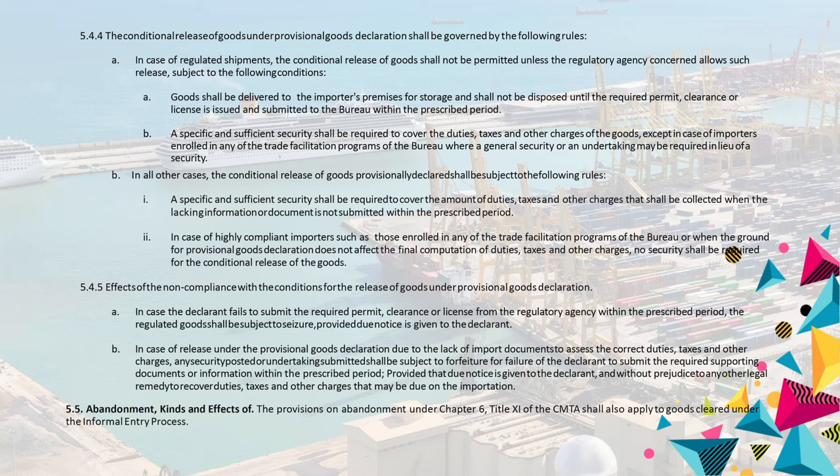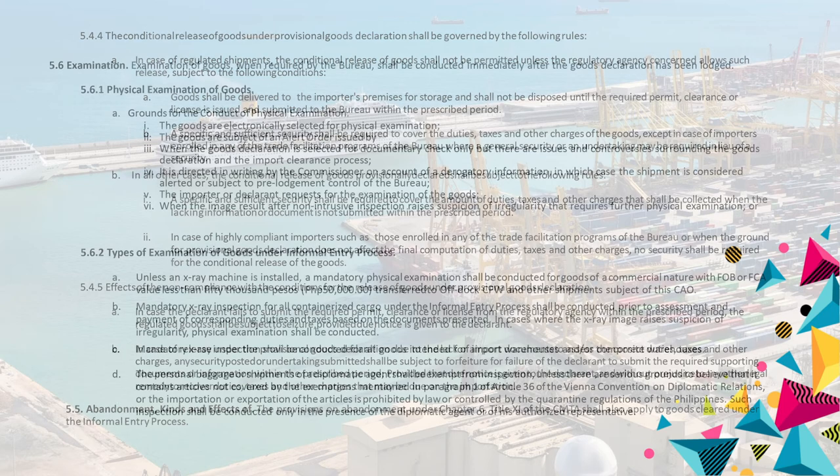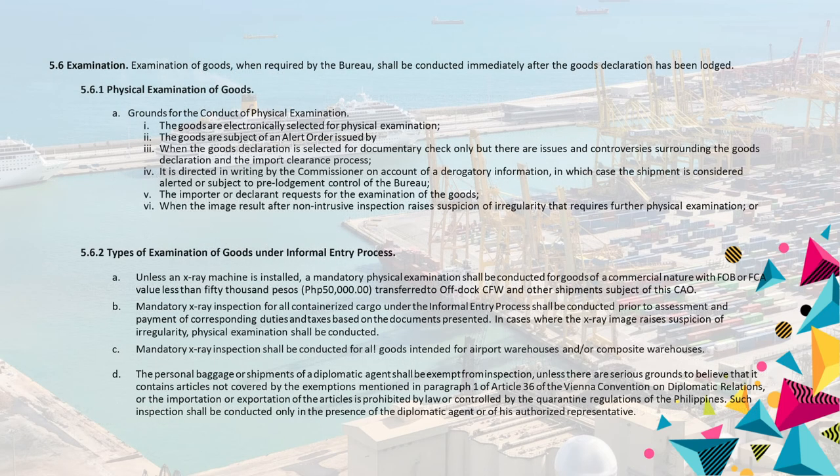5.5 Abandonment, Kinds, and Effects. The provisions on abandonment under Chapter 6, Title XI of the CMTA shall also apply to goods cleared under the informal entry process. 5.6 Examination. Examination of goods, when required by the Bureau, shall be conducted immediately after the goods declaration has been lodged.